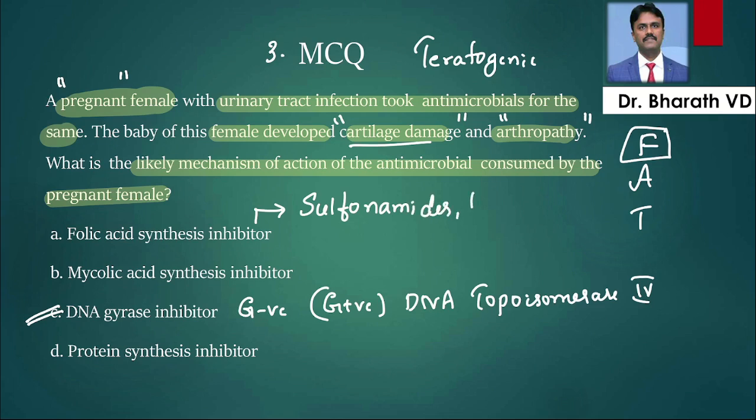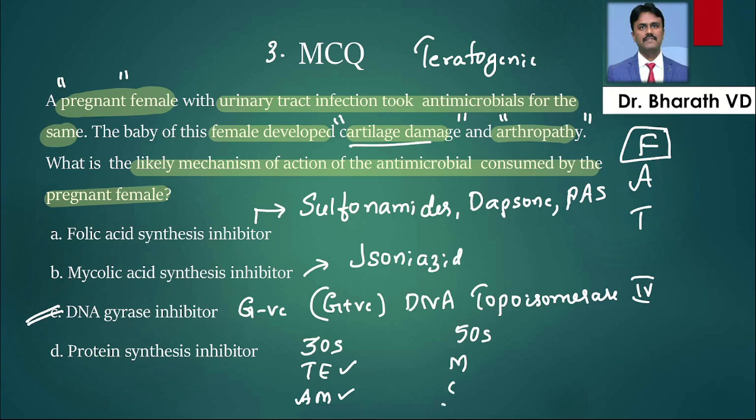Mycolic acid synthesis inhibitors are drugs used in leprosy called dapsone, drug used in TB second-line PAS (para-aminosalicylate), and isoniazid, a drug used in tuberculosis. Protein synthesis inhibitors, we have plenty. Let me give the drugs attached to 30S. The mnemonic is TEAM: T for tetracycline, AM for aminoglycosides. For 50S, we have macrolides, clindamycin, quinupristin, dalfopristin, chloramphenicol, and linezolid.